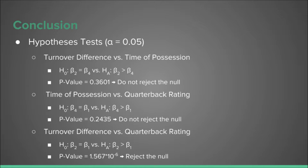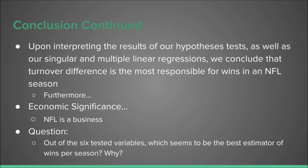Based on the results from the singular and multiple regressions, we decided to test whether the beta for one variable was truly greater than that of another variable. More specifically, we tested turnover differential, time of possession, and quarterback rating all against each other. There is not sufficient evidence to conclude that the beta of turnover differential was greater than that of time of possession, or that time of possession's beta was greater than the quarterback rating's beta. However, there is evidence that suggests that the beta for turnover differential is greater than the beta for QB rating.